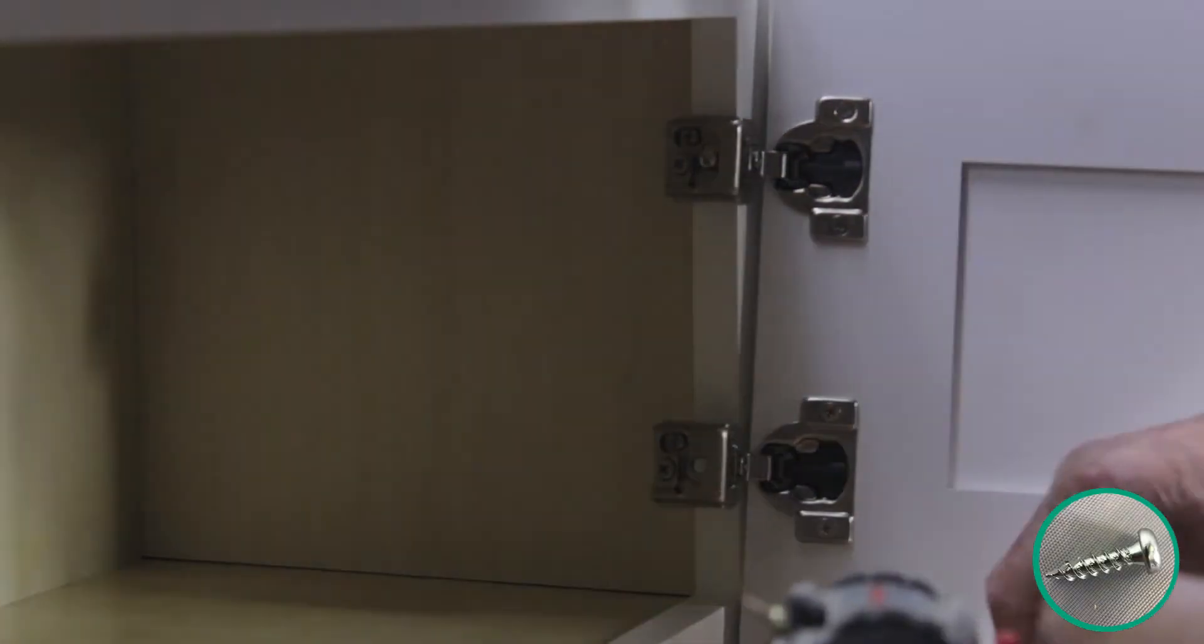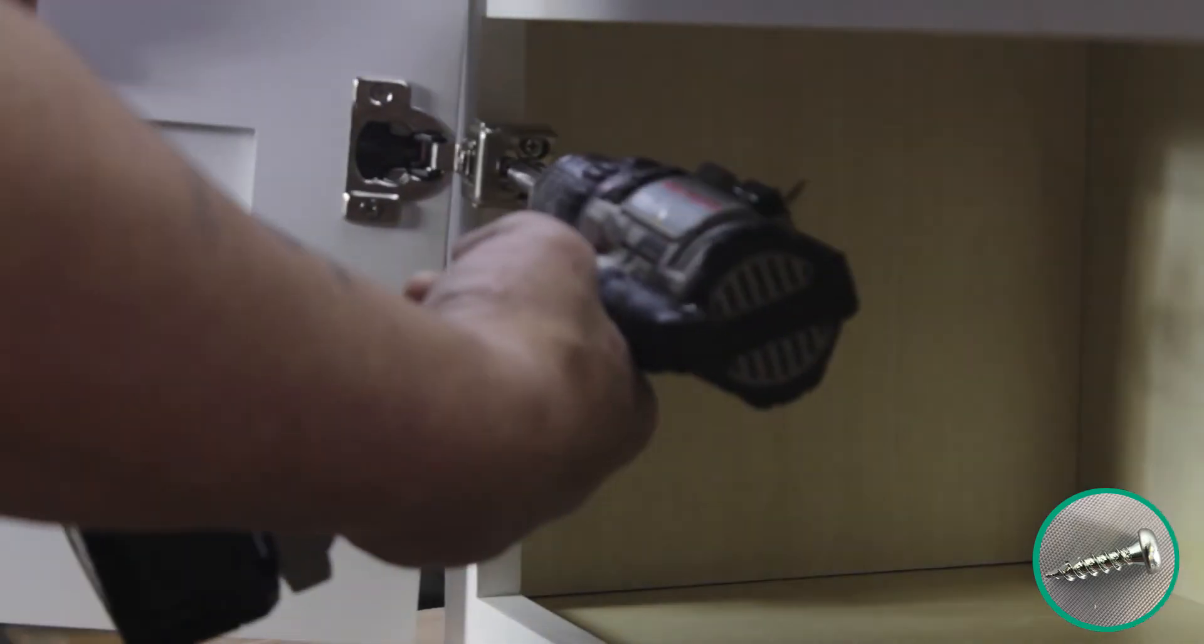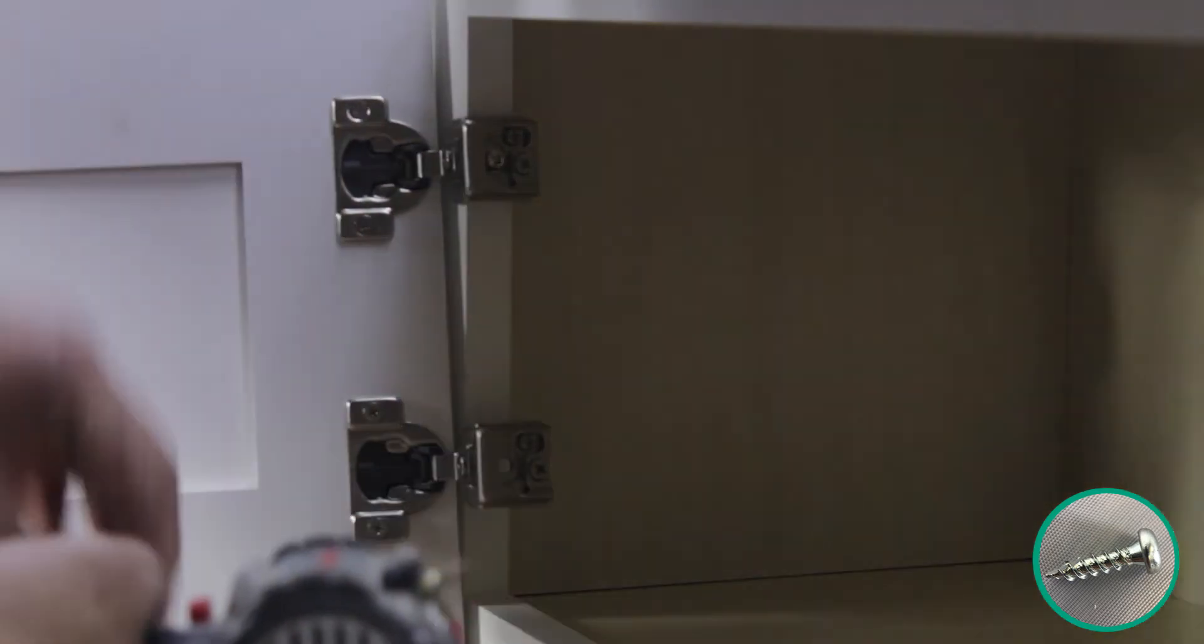Now place your door with attached hinges to the inside lip of the face frame and attach them to the cabinet using pre-existing dimples on the face frame.